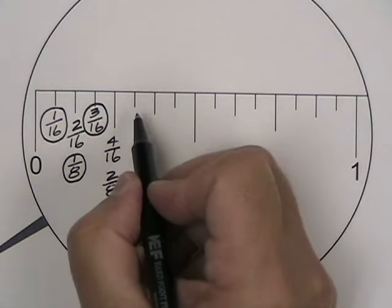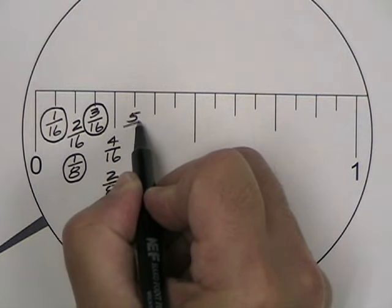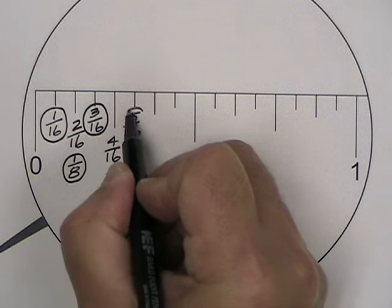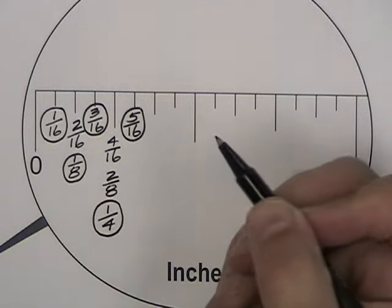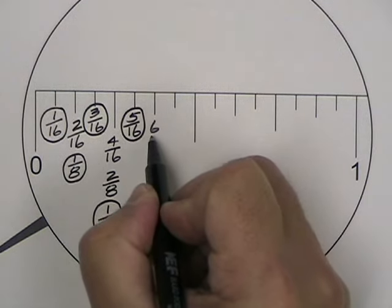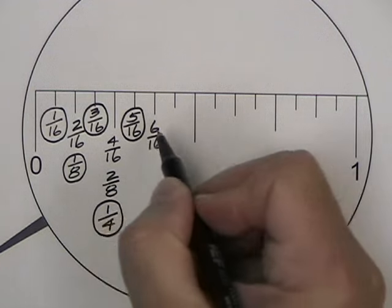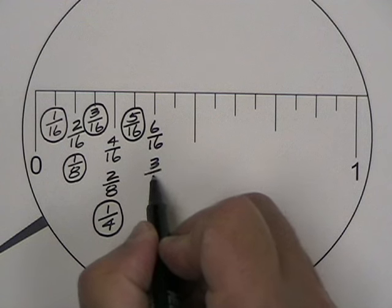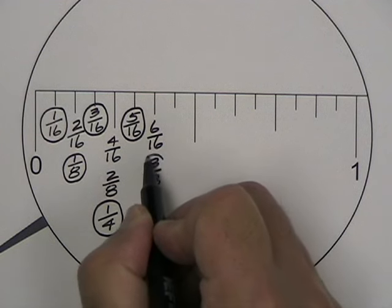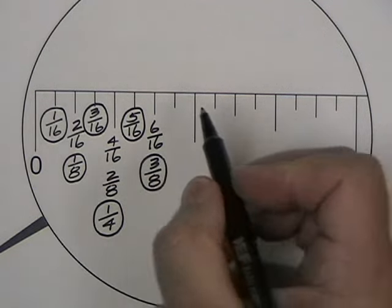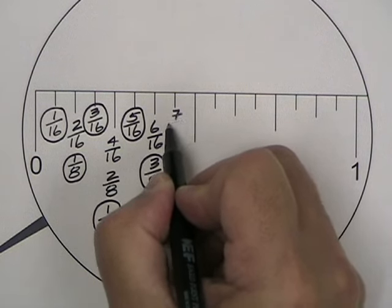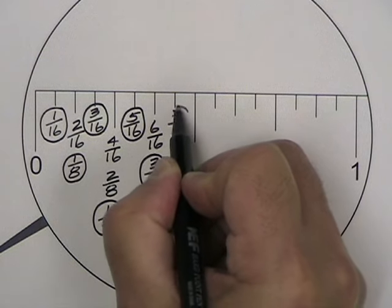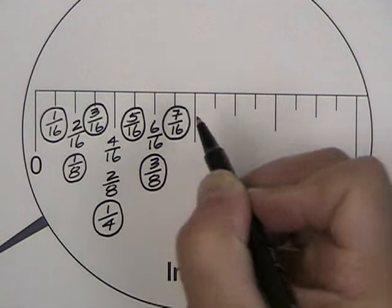The next segment, five sixteenths, cannot be broken down any further and it remains as five sixteenths. Six sixteenths can be divided top and bottom by two. That leaves us with a value of three eighths. Seven sixteenths cannot be broken down any further and that remains as seven sixteenths.